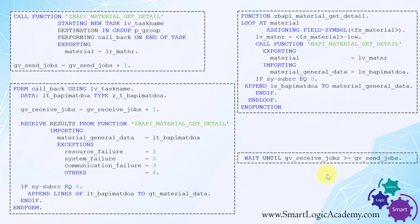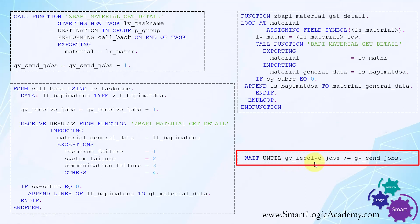Finally, you must wait for all parallel processes to complete. Use the keyword WAIT UNTIL — we wait until GV_RECEIVE_JOBS is greater than or equal to GV_SEND_JOBS. Now let's go to the SAP system and check out the written ABAP code for this parallel processing.